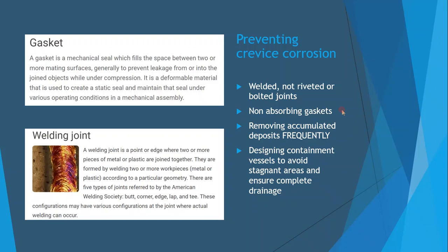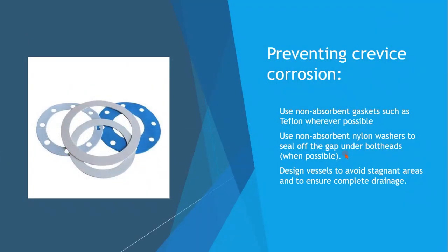To prevent crevice corrosion: use welded rather than riveted or bolted joints, since bolted joints create spaces for aeration. Use non-absorbing gaskets such as Teflon. Remove accumulated deposits frequently if possible, and design containment vessels to avoid stagnant areas and ensure complete drainage. Use non-absorbent nylon washers to seal off gaps under bolt heads if possible.